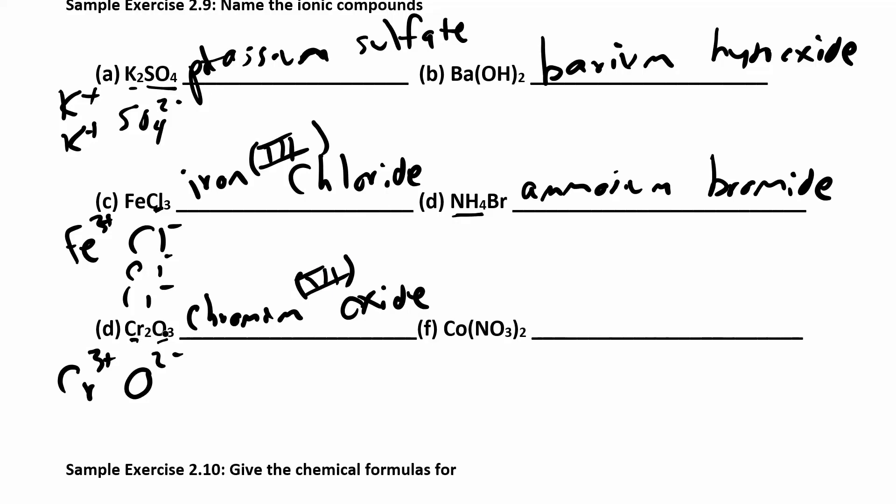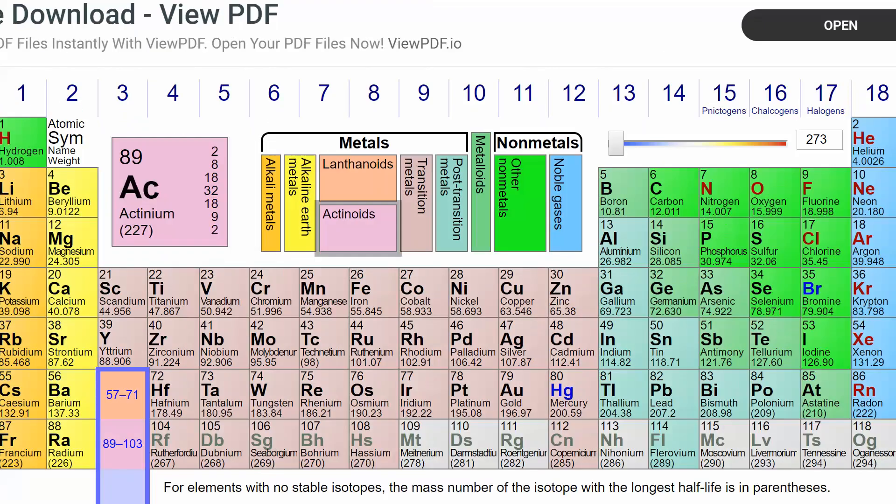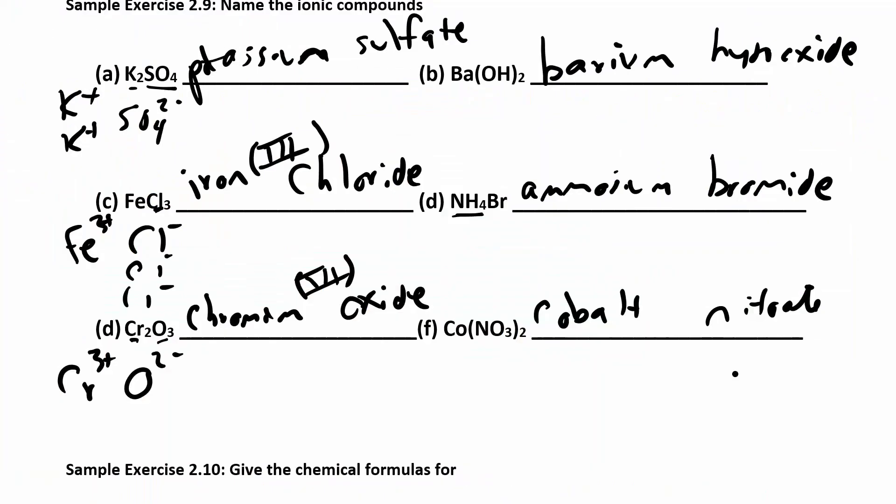Co(NO3)2. Co is cobalt, and then NO3 is nitrate. You have to look up where's cobalt. Spoiler alert, it's in the middle there. Cobalt, so I need to figure out what the charge is. The subscript over there is 2, so this came from cobalt 2+ and NO3 minus. So when I crisscross there, I get cobalt two nitrate.